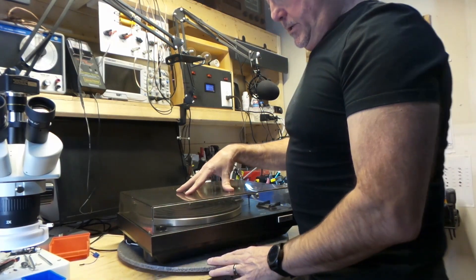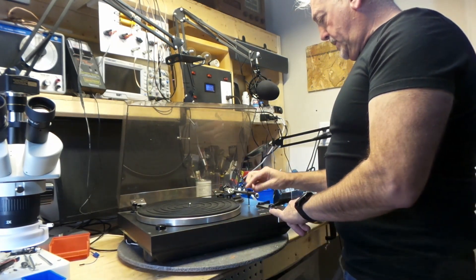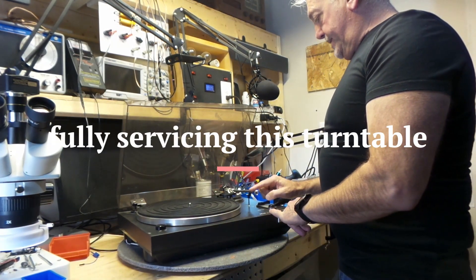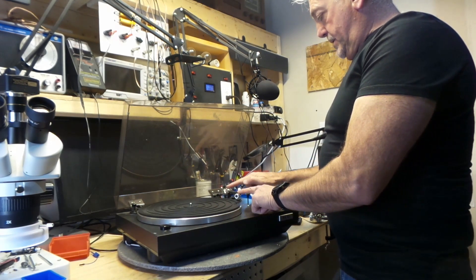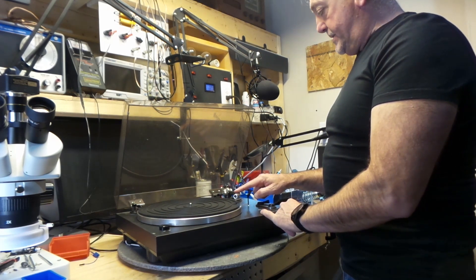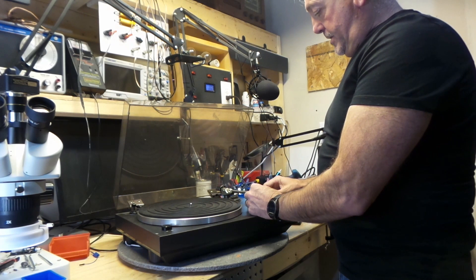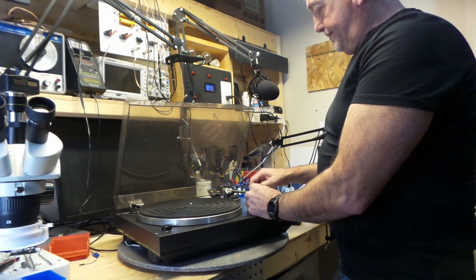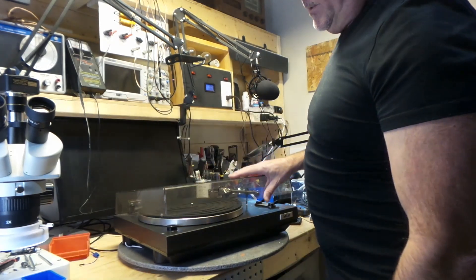There on the bench today is a turntable. The customer brought it in. He's saying that the tonearm doesn't go completely down to sit on the record. This is the up-and-down arm. There might be an issue here so we'll have to look it up. I told him that I would take a look at it.